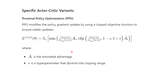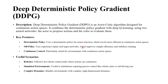Looking at the equation: PPO modifies the policy gradient update by using a clipped objective function to ensure stable updates. Here we can see the clipped policy ratio from the old one, and a hyperparameter to control the range of the clipping — how far we want the clip. We also have the advantage, which comes from the previous reinforcement learning idea.